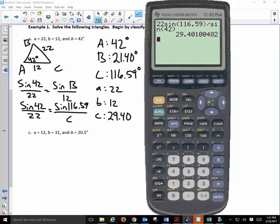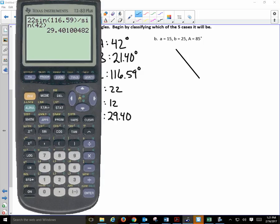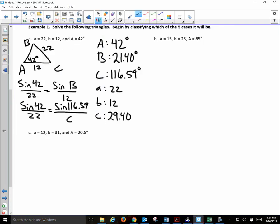Now, I solve for side C by using law of sines. Sine of 42 over 22 will sine of 116.59 divided by C. 29.40. I do my check. Largest angle, largest side. Smallest angle, smallest side. We're good to go. Reasonable. Everybody got that? That was reviewed from yesterday, right? Let's see what's not reviewed from yesterday.